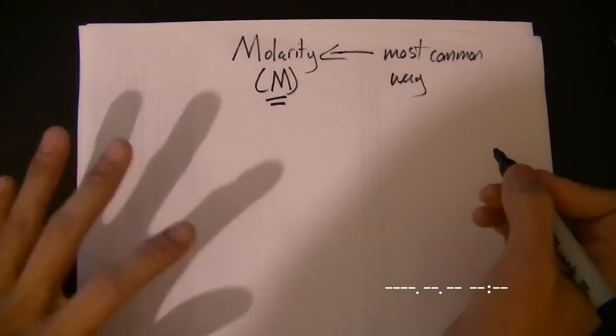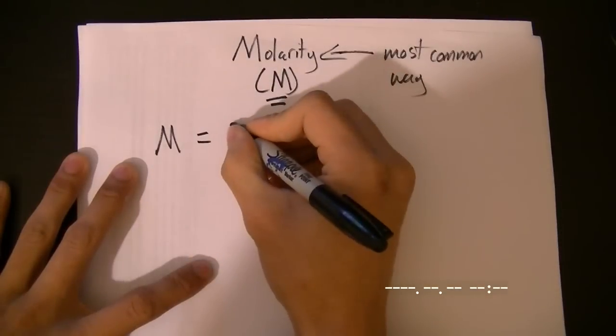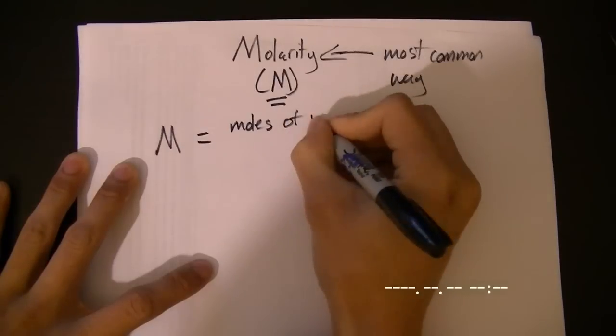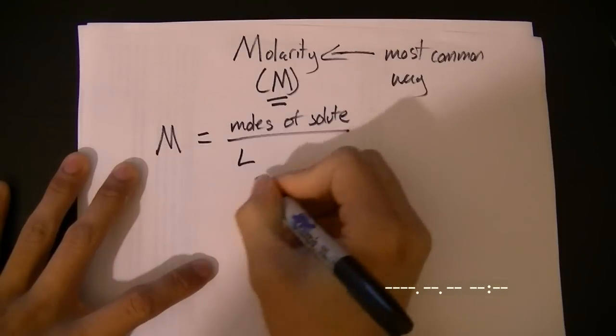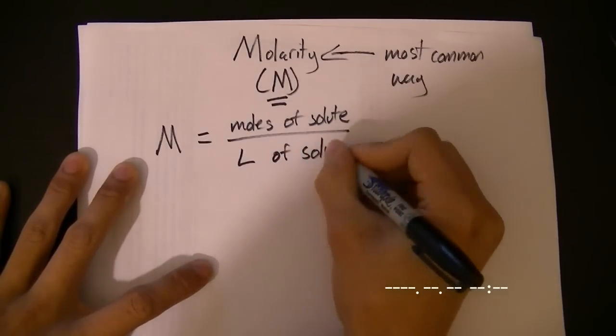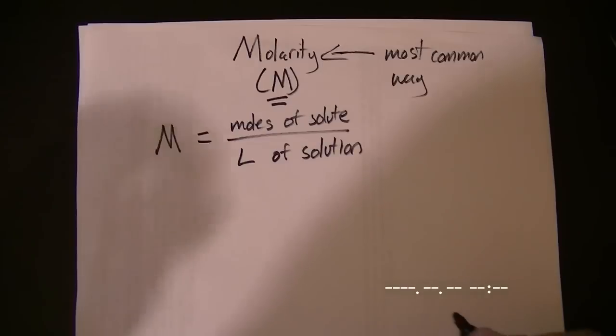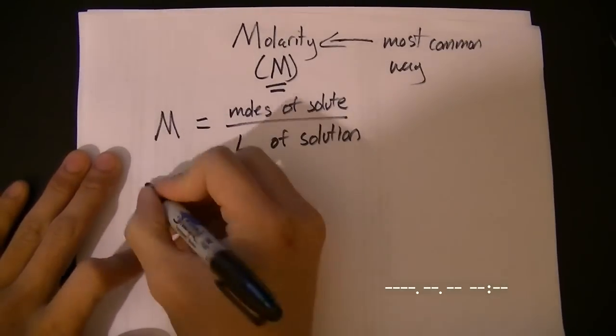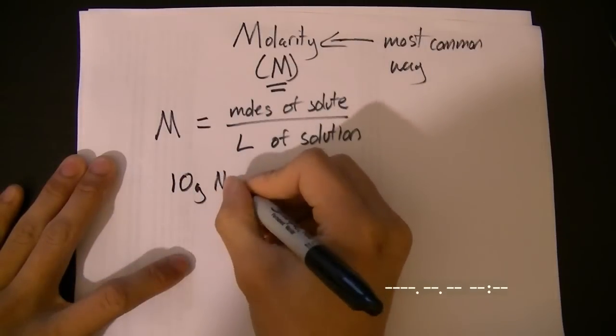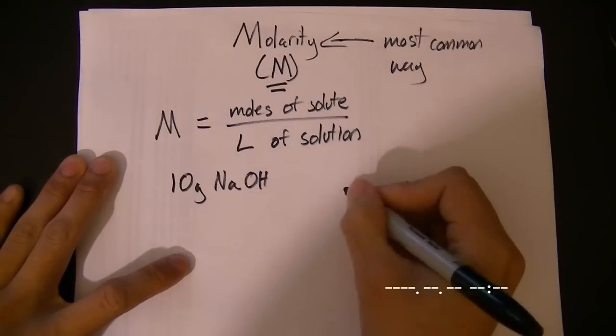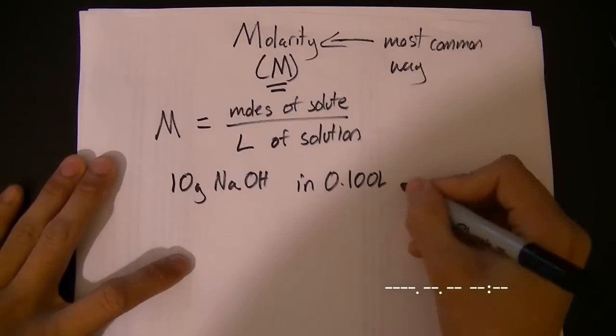And what essentially molarity is is the moles of solute over liters, not milliliters, liters of solution. Pretty simple. For example, let's say we decided one day we're making some sort of cleaner, and we decided one day we would dissolve 10 grams of sodium hydroxide in 0.100 liters of our cleaner solution.